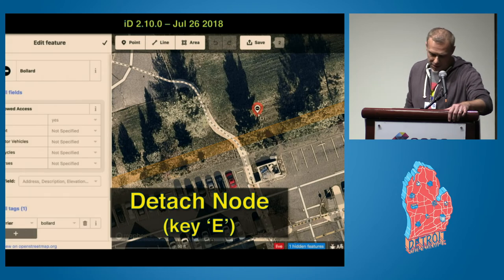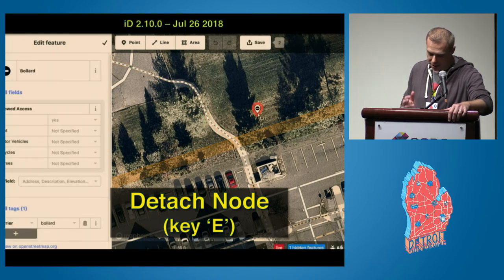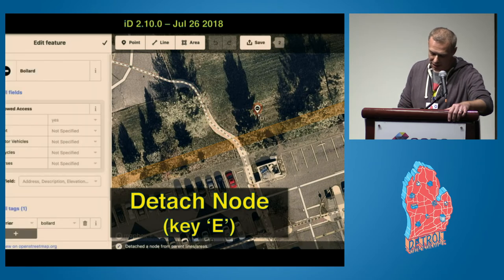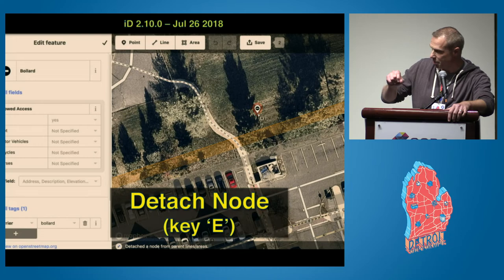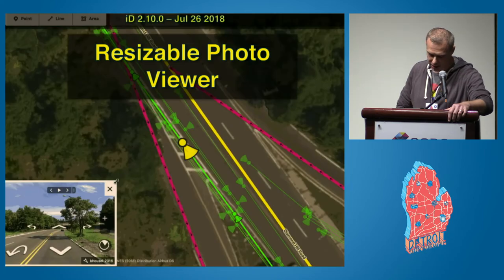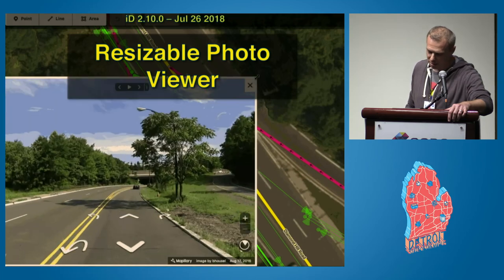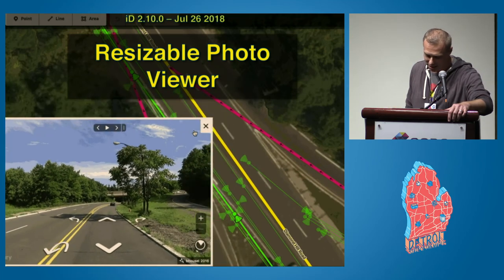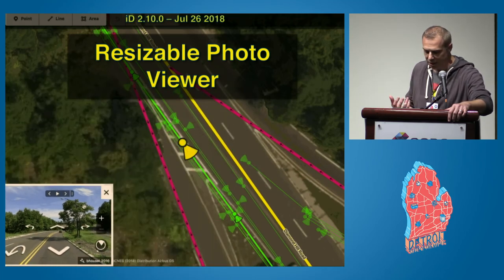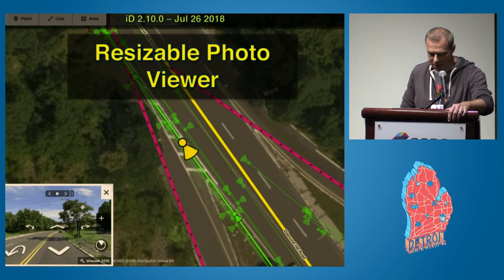We also snuck in a couple other cool features to version 2.10. One of our contributors, Siggio, added a command to let you detach a node from a way and move it someplace else. It really feels like magic to just grab this bollard and hit the E key and have it pull right to your cursor. Also, shout-out to Mateus from Mapillary, who made it possible to resize the viewer window. This works for any of the photo layers — Mapillary, OpenStreetCam, and Bing Street Side.